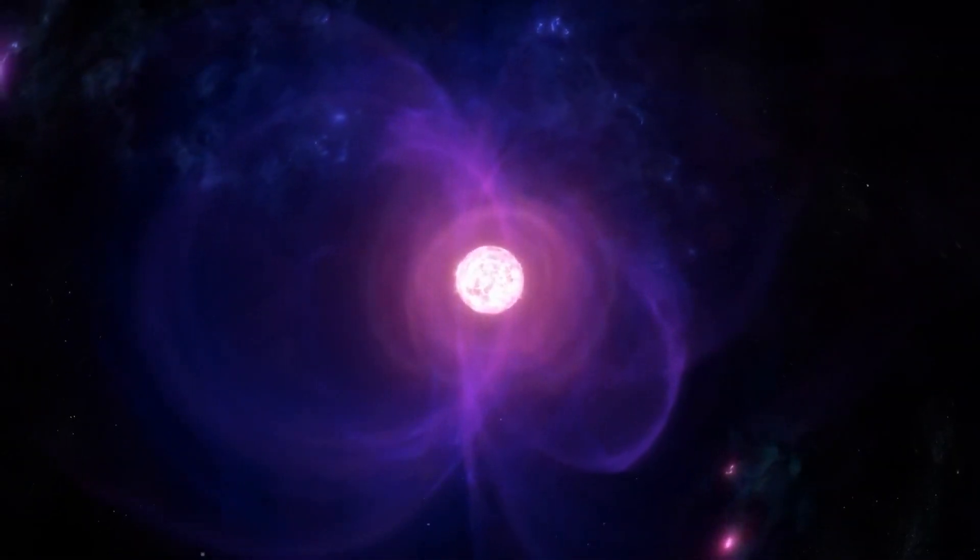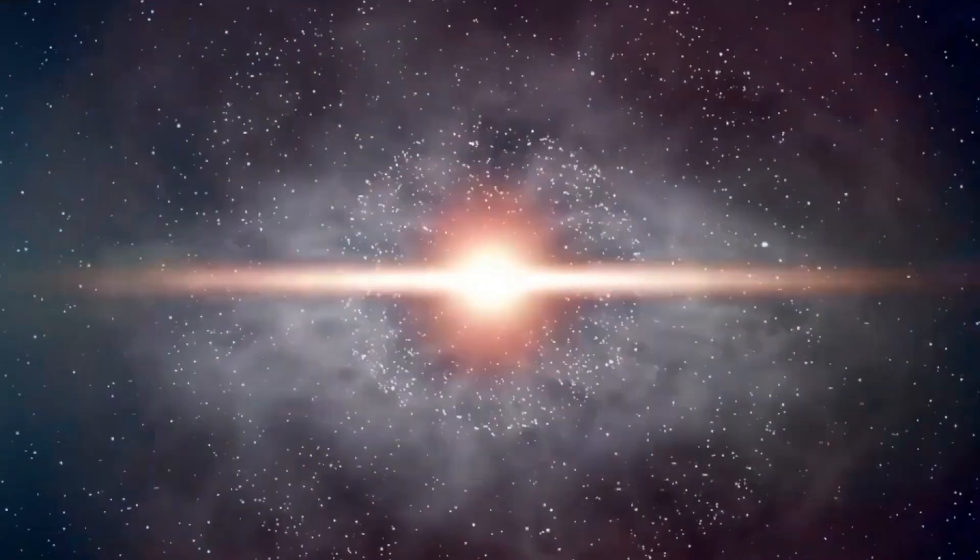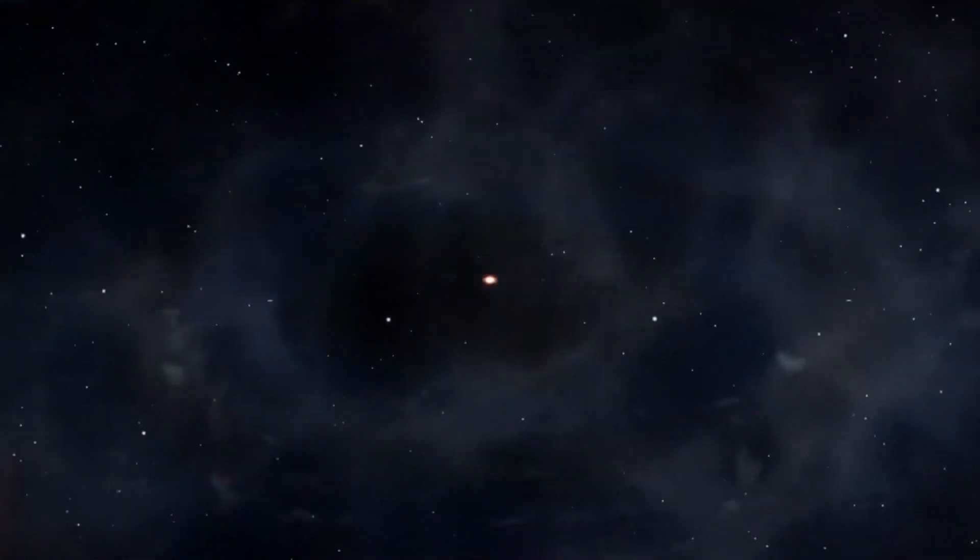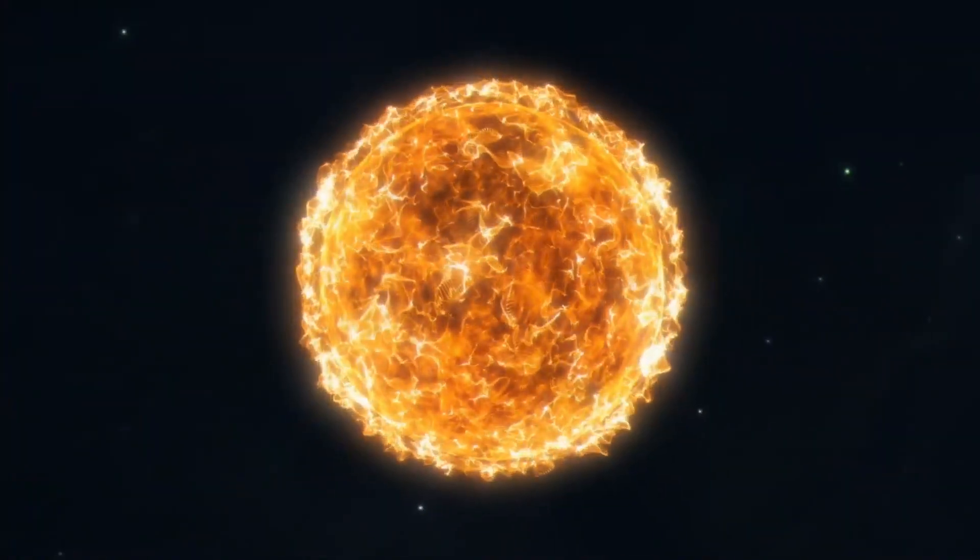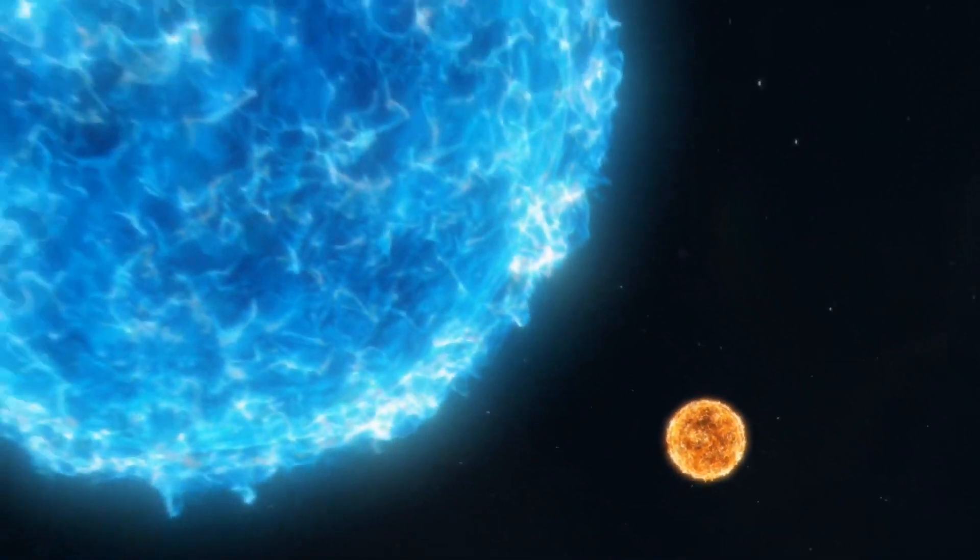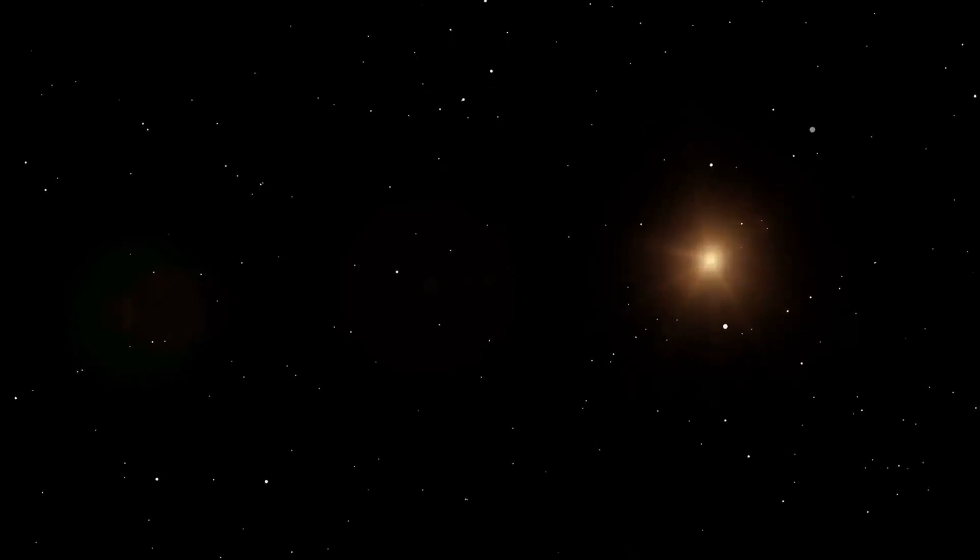When a supernova happens, it sends out shockwaves that can compress gas and dust clouds around it. This can cause new solar systems and stars to form. The fact that the death of one star leads to the birth of several others shows that the world is always changing.